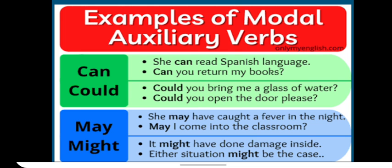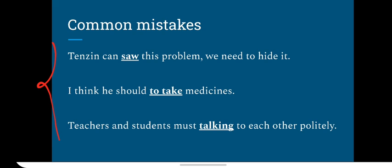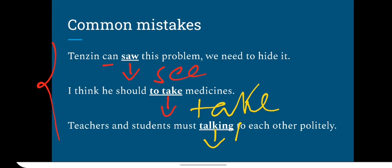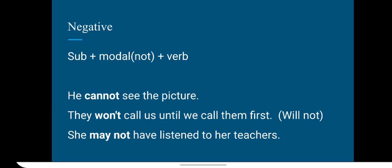Now these are some common mistakes that learners make, and that is after modal verbs, you are not supposed to change the main verb. Even if you are talking about something that had happened in the past, we just keep the verb the same. Tenzin can see, Tenzin could see, Tenzin may see, Tenzin might see. And I think he should take now. See, after this modal verb, we have used to take, which is not acceptable. You are only supposed to use the basic form, which is take here, without to or anything. Likewise, teachers and students must talk. So here, talking is also another form of the main verb. So we will keep the main verb the same. There is no change in the main verb after our modal verbs. So do not make such mistakes.